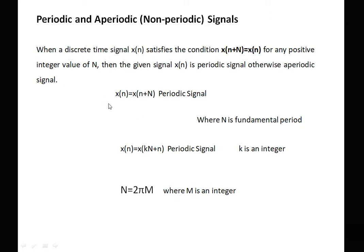To show that a signal is periodic or aperiodic, we generally take N in the form of 2πm, where m is an integer. Now we will see the first example of when a signal becomes periodic and when it becomes non-periodic.